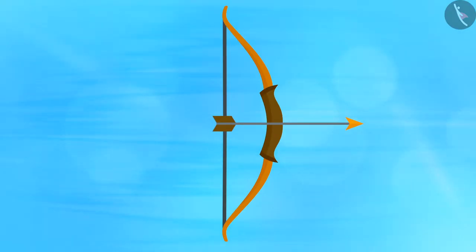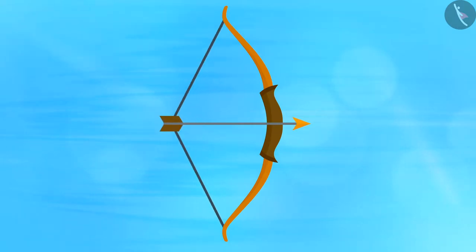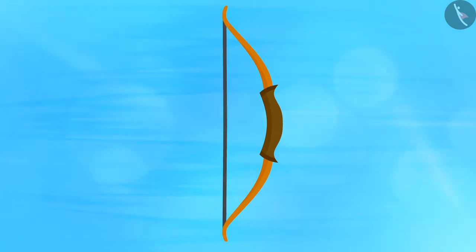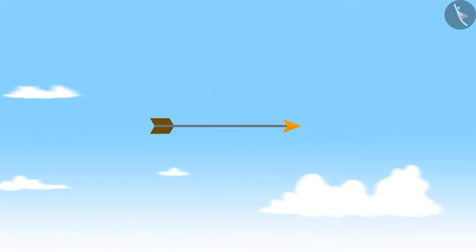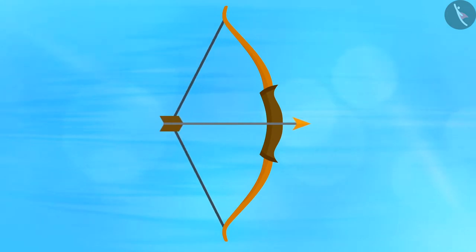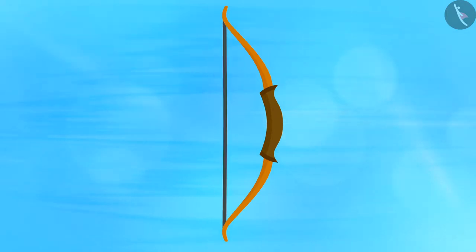Now take a bow and an arrow. Place the arrow on the bow with one end supported by the string, then stretch the string and release the arrow. You will notice that the arrow flies off to a certain distance. The bow stores potential energy when the bowstring is stretched, and this energy then changes to the kinetic energy of the flying arrow.